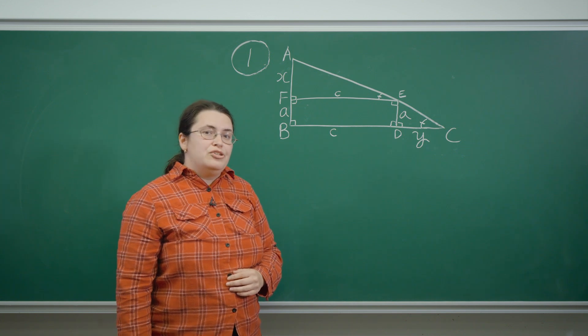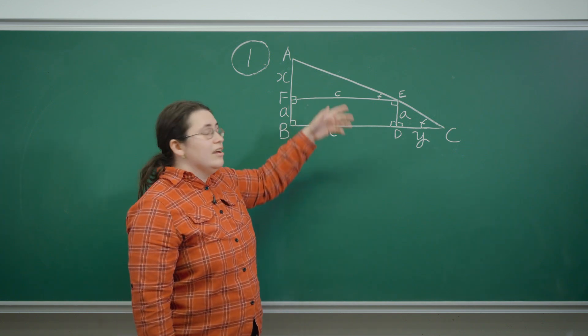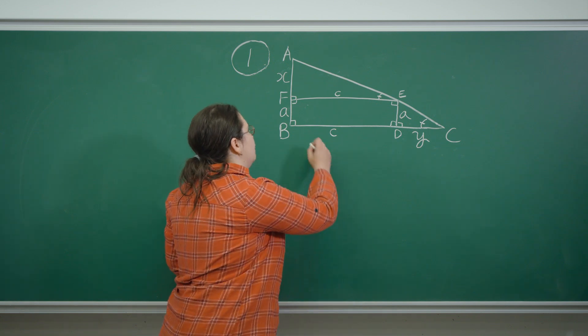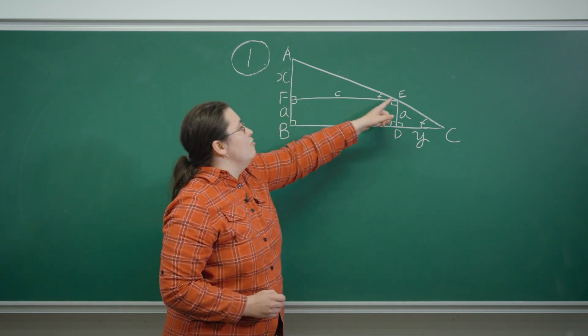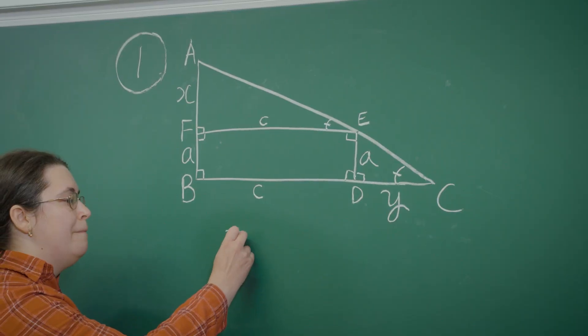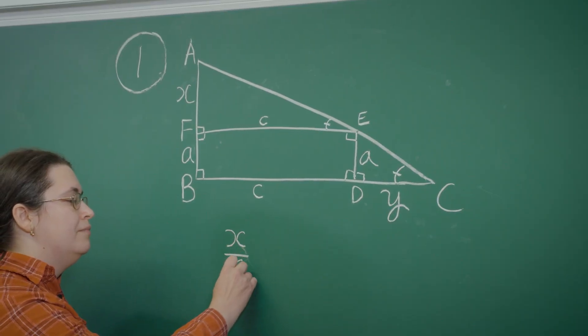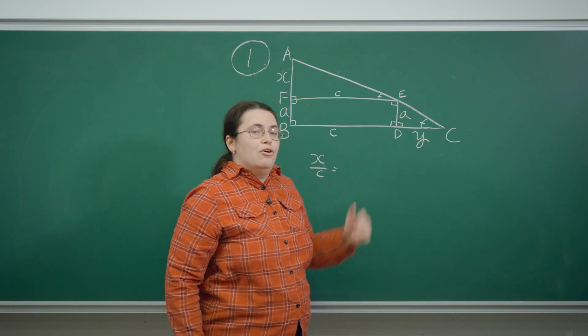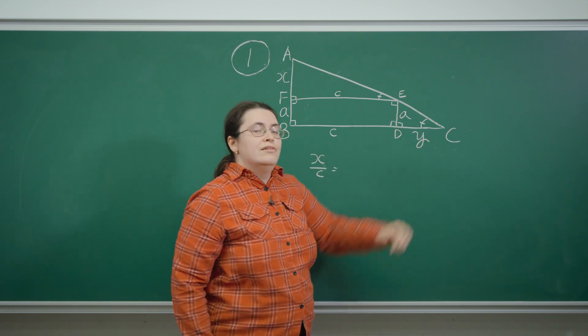Therefore we know that the ratios of corresponding sides in the triangles will be equal. We therefore know that AF over FE, which is X over C, is equal to A over Y because that's ED over DC.